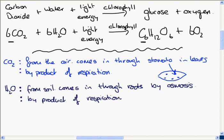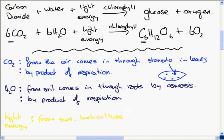Light energy — the plant gets the light energy from the sun, and it can absorb it using the chlorophyll. Chlorophyll is very important for absorbing light energy. In horticulture, when people want to grow a vast amount of plants as quickly as possible, in a greenhouse the plant can get the light energy from lamps.